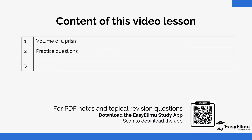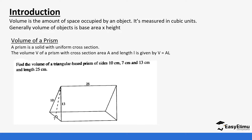Volume is the amount of space occupied by an object. It is measured in cubic units — it can also be measured in meter cubed, centimeter cubed — depending on the units given in your question. Always ensure that your units are correct as you finish your calculation. Generally, the volume of objects is based on area times height.